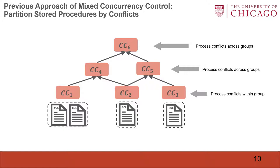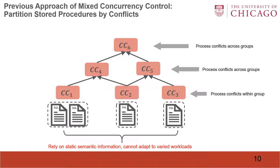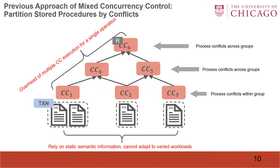It has two major drawbacks. The first is that it relies on static semantic information and therefore cannot adapt to varied workloads. The second is that for each operation, it needs to go through multiple protocols, which introduces the overhead of multiple concurrency control executions for a single operation.